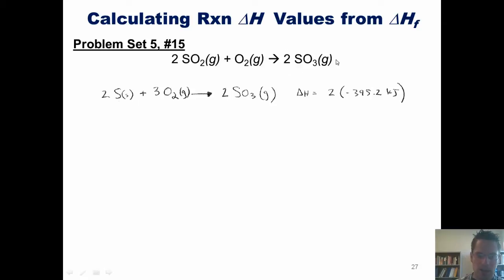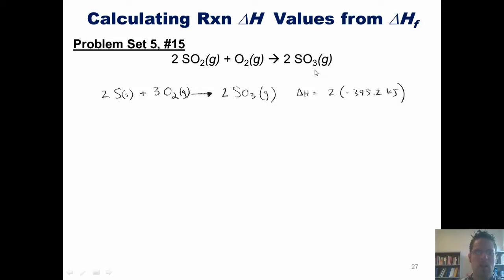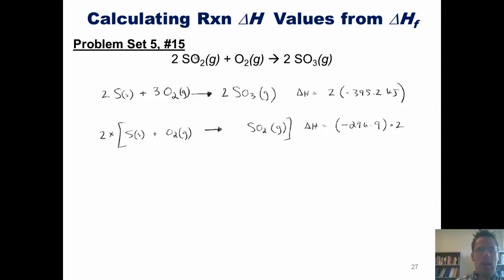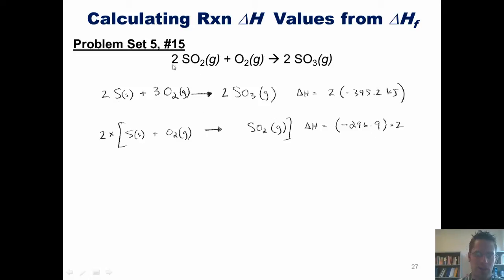Beginning with SO3, shown on the product side of our reaction, looking up Appendix C, when SO3 is formed from its parent elements sulfur and O2, it gives an overall delta H of formation of negative 395.2 kilojoules. Because there is a 2 in front of our SO3 in the balanced equation, we multiply all coefficients and the delta H by 2. Moving to SO2: from Appendix C, solid sulfur and O2 gas combining to form SO2 gives a delta H of negative 296.9. Since SO2 has a 2 in front of it, we multiply the equation and delta H by 2.